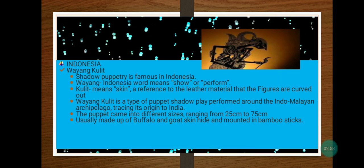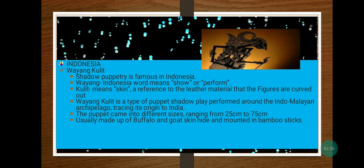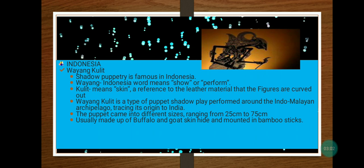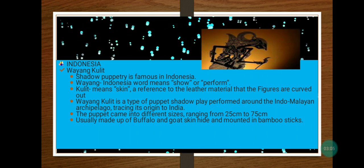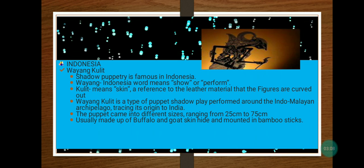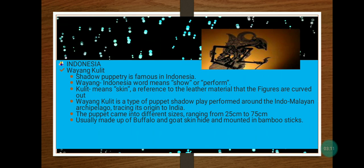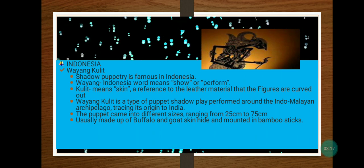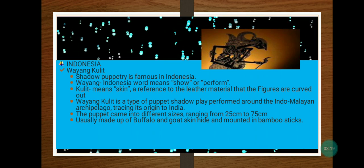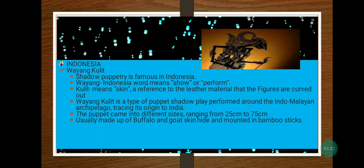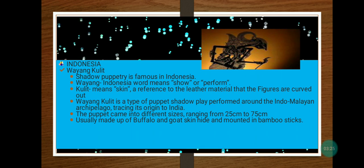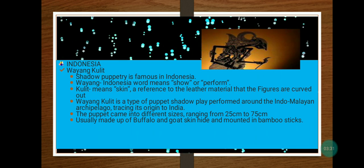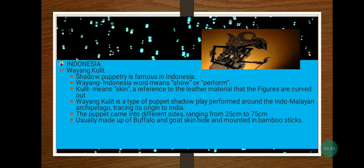In Indonesia, the wayang kulit shadow puppet theatre is famous. 'Wayang' in Indonesian means 'show' or 'perform,' and 'kulit' means 'skin,' a reference to the leather material that the figures are carved out of. Wayang kulit is a type of puppet shadow play performed around the Indo-Malayan archipelago, tracing its origin to Indonesia. The puppets come in different sizes ranging from 25 cm to 75 cm, usually made of buffalo and goat skin, and mounted on bamboo sticks.